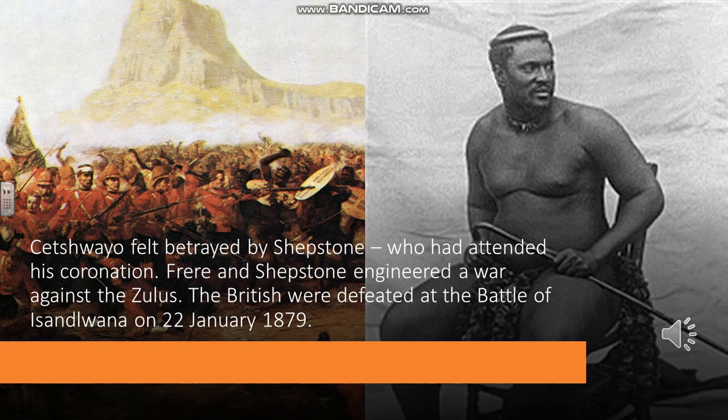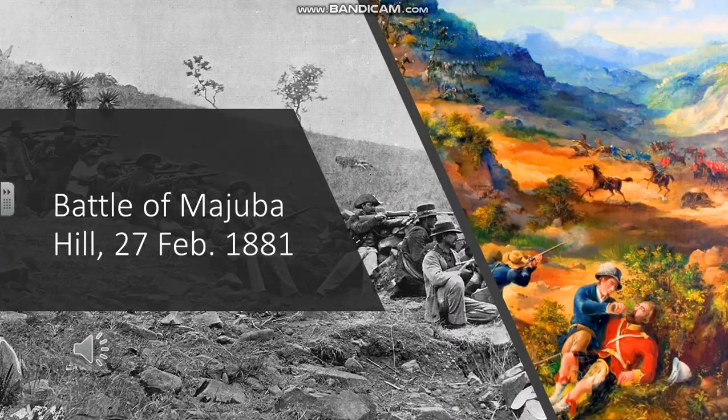So, as we'll see in the next slide, the Boers in the Transvaal now rebelled against the British. You've heard of the Battle of Majuba Hill and Lang's Neck — two occasions when Boer commandos, irregular soldiers who were crack shots and good horsemen, managed to defeat the British.